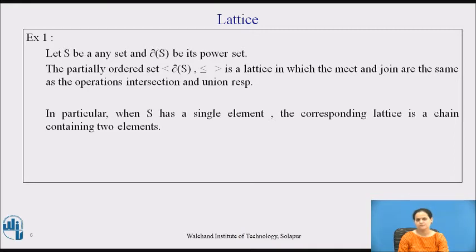Note that if there are n number of elements, we simply get 2^n number of possible subsets, including φ the empty set and the given set itself. The partially ordered set (ρ(S), ≤) is a lattice in which the meet and join are the same as the operations intersection and union, respectively.